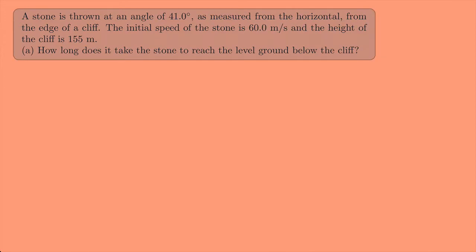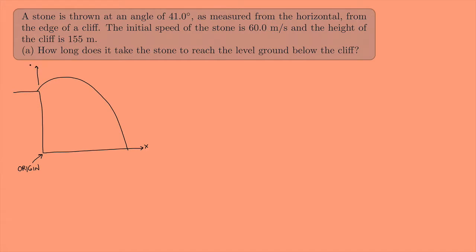Let's start with Part A: how long does it take the stone to reach the level ground below the cliff? Before we do anything, we should probably draw a picture. Here is our cliff, here is the level ground below, and we're throwing a stone from the edge of the cliff down to the bottom. We should also pick an origin — I'm going to let this be the origin right here. That direction is going to be positive x, and up is going to be positive y. I'll define the initial position as the stone's launch point, and the final position as when the stone lands.